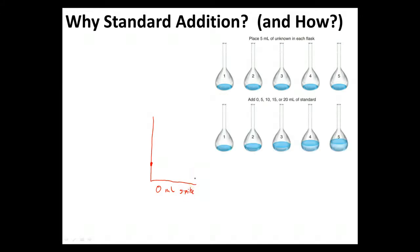Now, what I'm going to do is I'm going to add in some of my standard, and notice I'm making a calibration curve. I've got none of my standard added. I've added standard addition, 5 milliliters, 10, 15, 20, and notice how the volumes are all different right now.